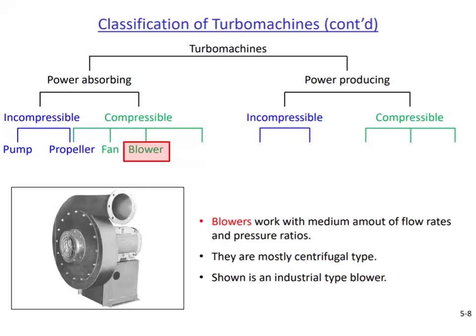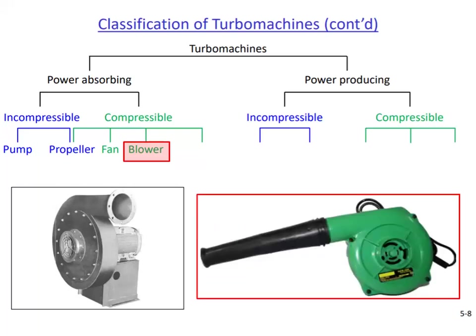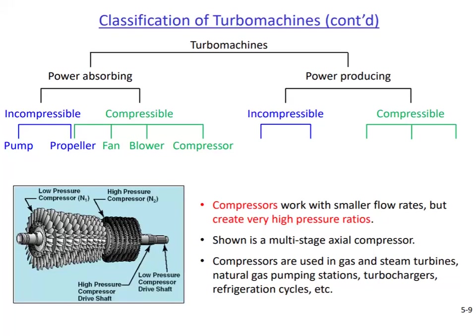When we search for a blower, what we find often looks like a handheld device typically used to blow away leaves fallen from trees. The final power absorbing machine is the compressor. Compared to fans or blowers, compressors create much higher pressure ratios between their inlets and outlets. Similar to a pump, their main task is to pressurize a fluid — but this time a gas.